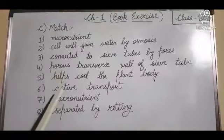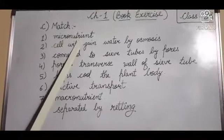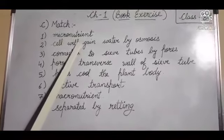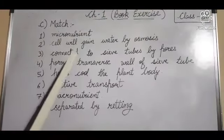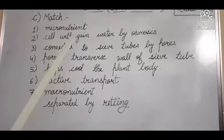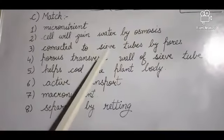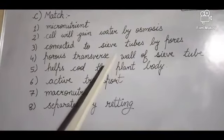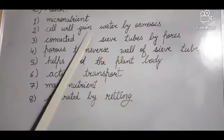Next is match the following. First is zinc - you know that it is a micronutrient. Zinc, copper, manganese, iron, boron are all micronutrients. Then hypertonic solution - here cell will gain water by osmosis. When placed in hypotonic solution, water concentration outside is more than the cell, so water will move inside the cell. It will gain water.